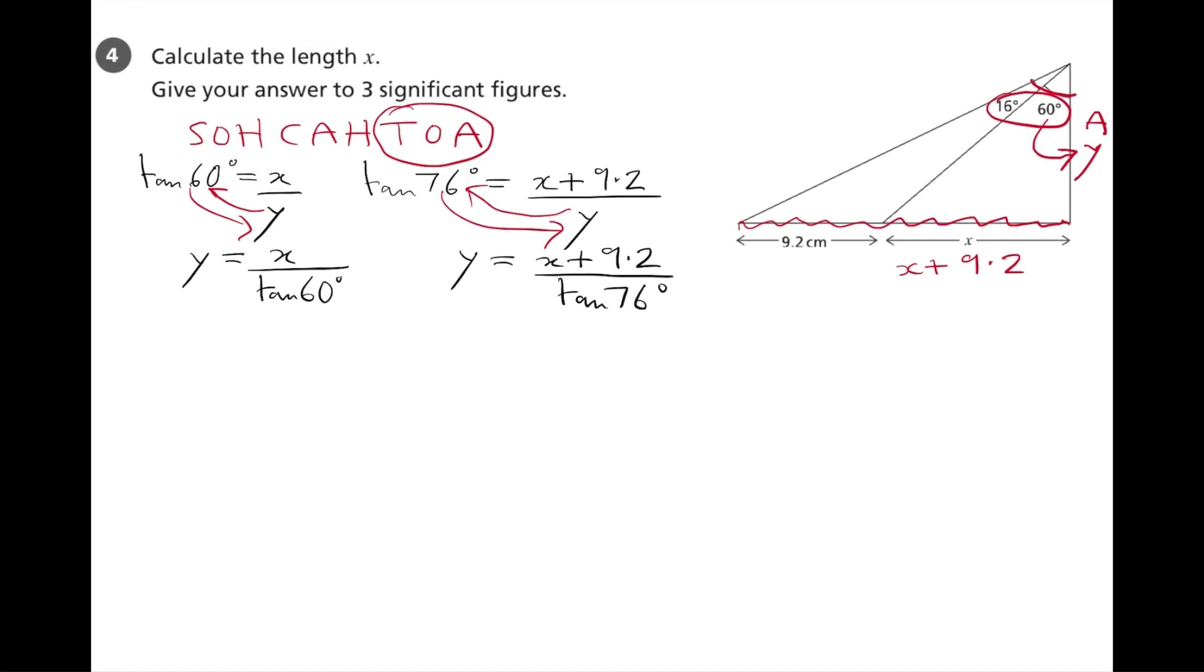We now can equate the two equations, because they're both equal to y. So, we can write x over tan 60 is equal to x plus 9.2 over the tangent of 76. We need to isolate x, so we get rid of fractions first, multiply both sides by tan 60, multiply both sides by tan 76.